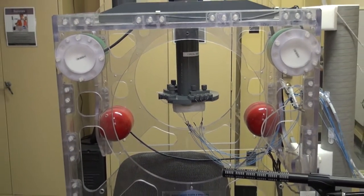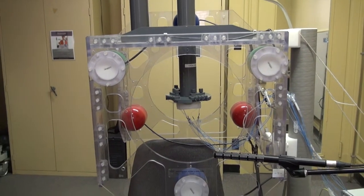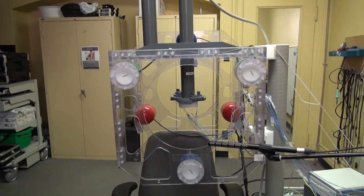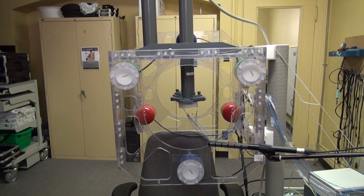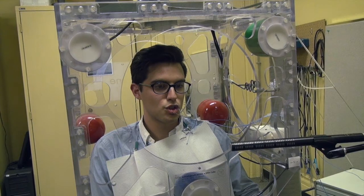The Electromagnetic Articulograph, or EMMA, is a minimally invasive magnetic imaging device that uses electromagnetic fields to track the movements of speech articulators over time during speech production tasks.